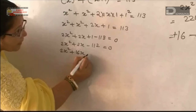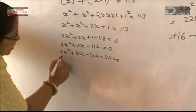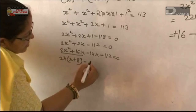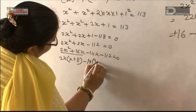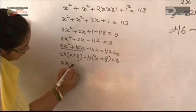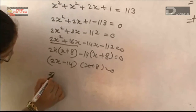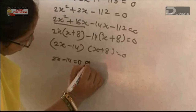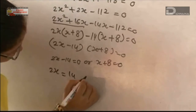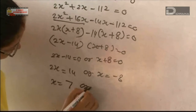So the equation becomes 2x squared plus 16x minus 14x minus 112 equals 0. Taking common: 2x(x plus 8) minus 14(x plus 8) equals 0, giving us (2x minus 14)(x plus 8) equals 0. Therefore 2x minus 14 equals 0 or x plus 8 equals 0. So 2x equals 14 giving x equals 7, or x equals minus 8.